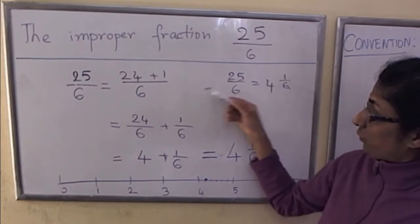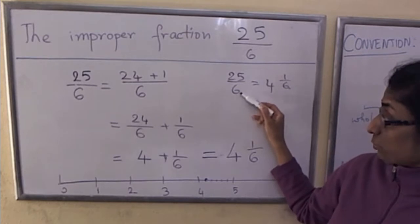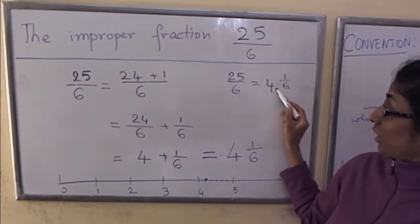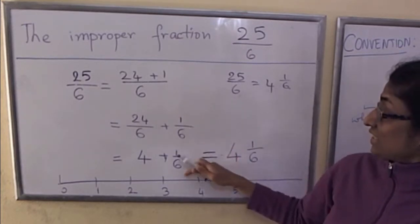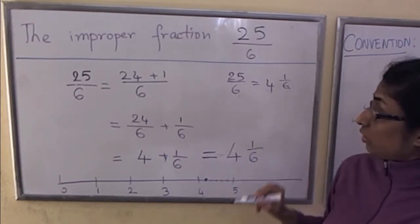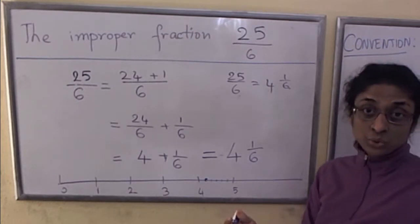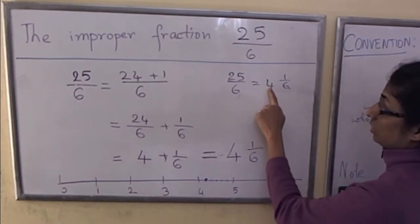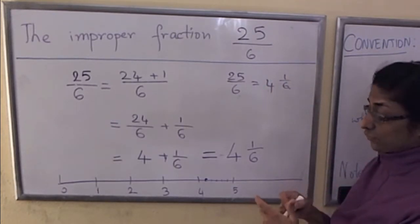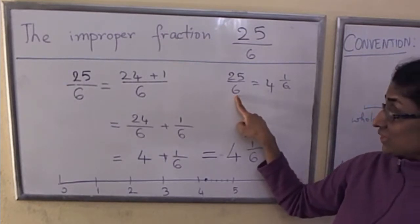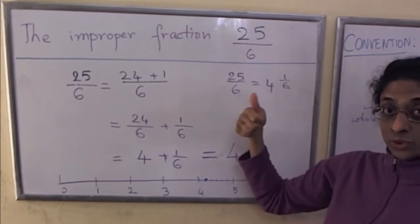We can either write out these steps and convert 25 over 6 to a mixed number like this, or we can proceed quickly as follows. I want to give you a shorthand way of getting this 4 and this 1. You start counting in 6s and go as high as possible but don't go over 25, and you keep track of the multiples.